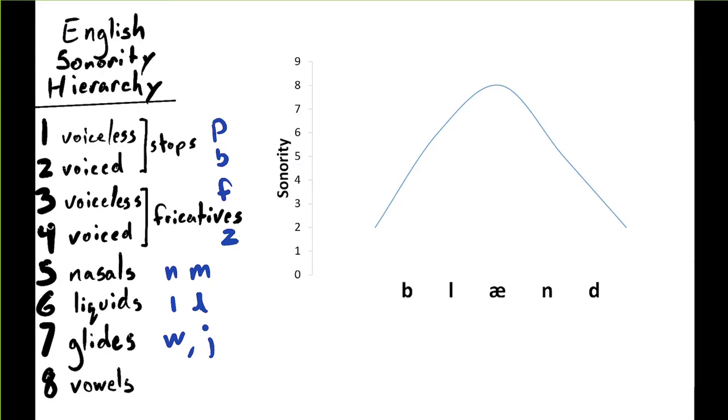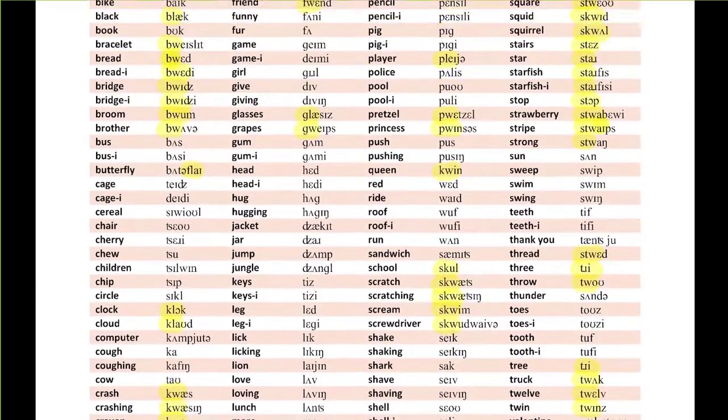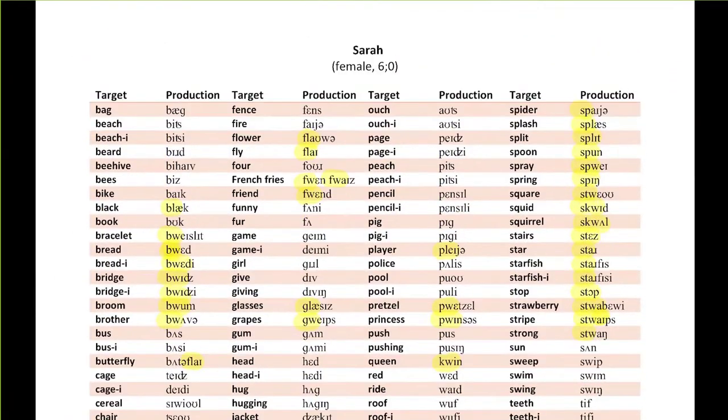Having established sonority and the ability to apply relative values of sonority to different segments in English, we'll now return to the data set so we can identify a cluster inventory. In this data set, I've already highlighted the occurrence of initial consonant clusters.